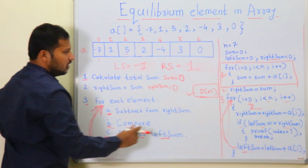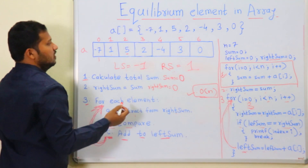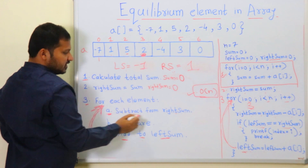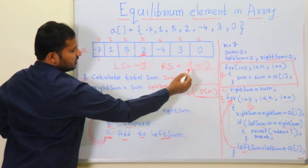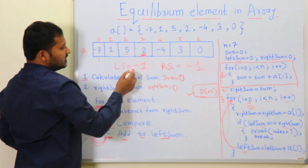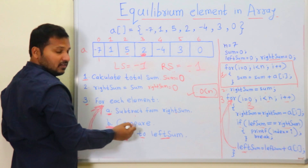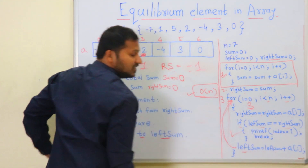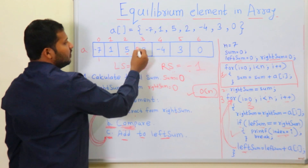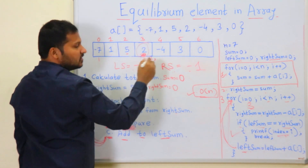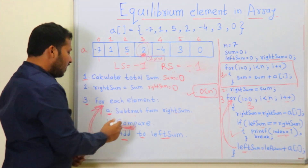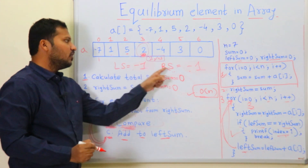Next iteration, i = 3, element = 2. Subtract from right_sum: 1 - 2 = -1. Compare: left_sum (-1) equals right_sum (-1)? Yes! The condition is satisfied. So index 3 is printed — the equilibrium element is 2 at index 3.